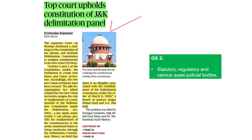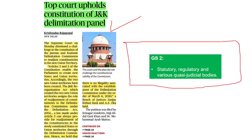These kinds of articles are important for GS Paper 2, that is statutory, regulatory and various quasi-judicial bodies, because the delimitation commission is a statutory body formed under the Delimitation Act. Let's first understand the context and then we will understand what is delimitation, what is the delimitation commission, and what is the Delimitation Act.